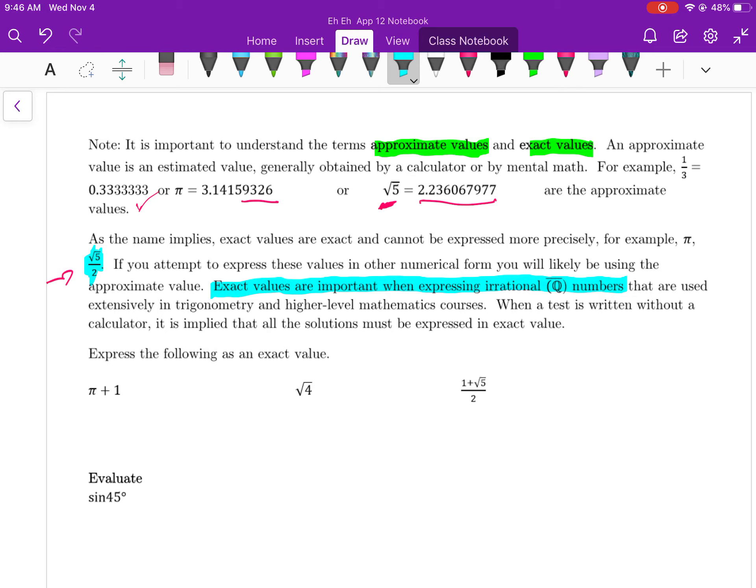All right, let's do this. We're going to express the following as an exact value. Pi plus 1. Pi plus 1 expressed exactly is, well, it's pi plus 1. You cannot express pi more exactly than pi itself. The square root of 4. We know that the square root of 4 is 2. Is it exactly 2? Yes, it is exactly 2.